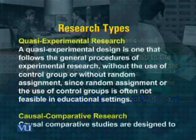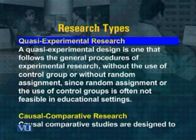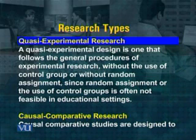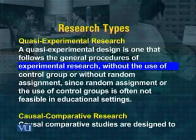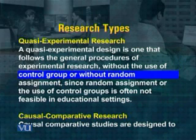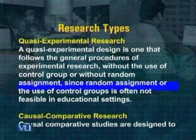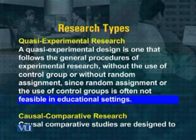Then we have quasi-experimental research. It is also one form of experimental research, but it differs from experimental research in two regards. Number one: it does not use a control group, or it is always without random assignment. Since random assignment or the use of a control group is often not feasible in many areas like education, this is another type of research.